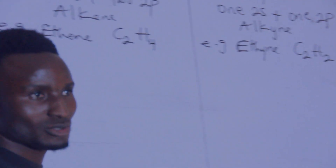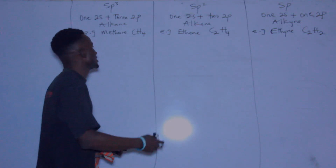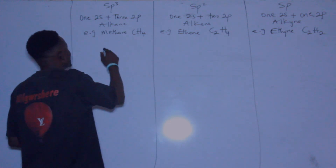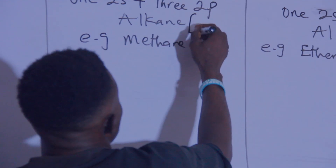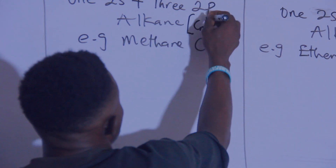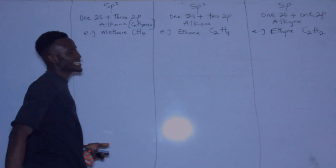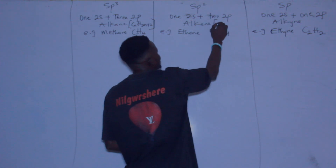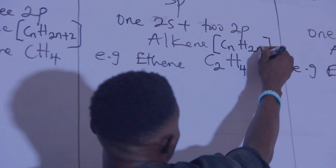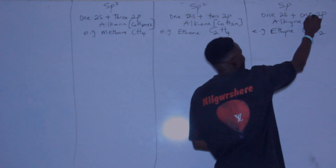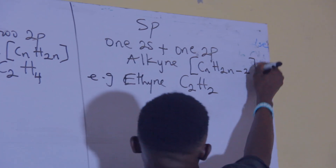The general formula for sp³ hybridization, which is alkane, is CₙH₂ₙ₊₂. The general formula for alkene is CₙH₂ₙ. And the general formula for alkyne is CₙH₂ₙ₋₂.